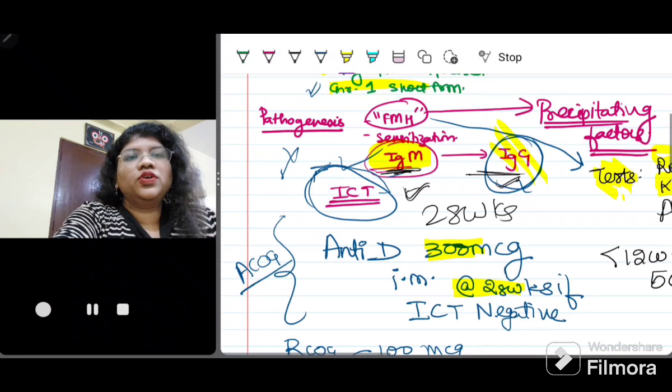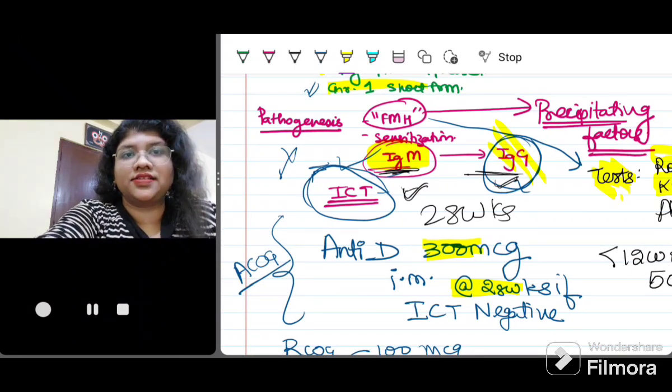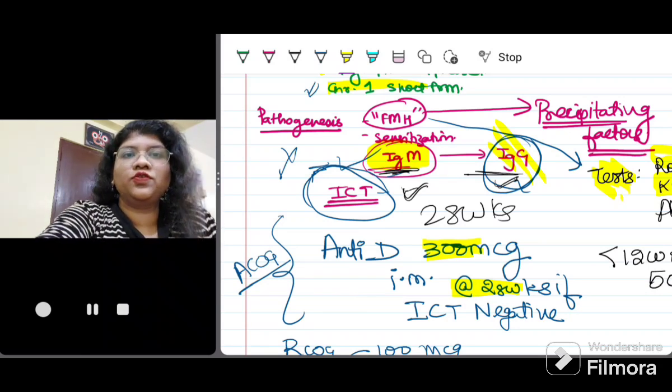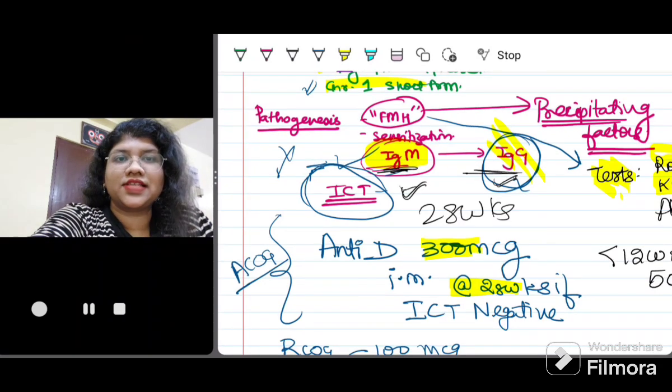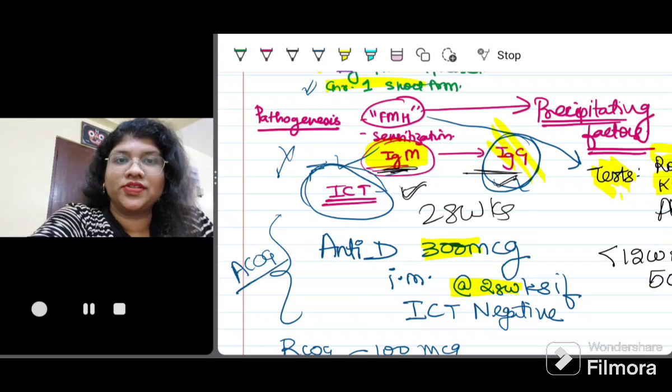So what do you do next to know that there is sensitization or not? We do a test called ICT. This is where we need to follow the algorithm. For first antenatal visit, we have to do her blood grouping and RH typing. If she is negative, then you have to do her husband's blood group and RH typing. If that is positive, then you have to go for an ICT test.